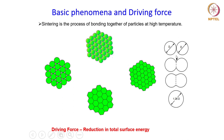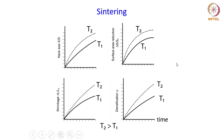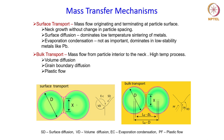The sintering process basically starts with the formation of a neck at the contact points between the particles. As this neck grows, densification happens in the compact. For the neck to grow, the material has to be transported towards the neck, and there are well-defined paths through which matter is transported from the particles towards the neck for it to grow and densification to occur.